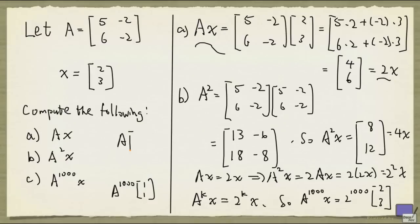Because A times 1, 1 is simply 3, 4. And 3, 4 is not a scalar multiple of 1, 1. So this trick here will not apply to the vector 1, 1.